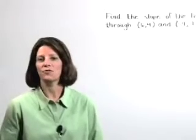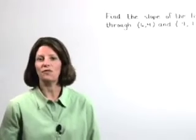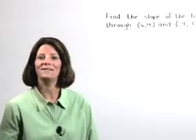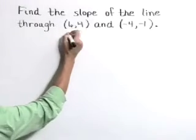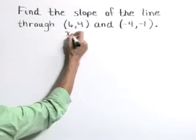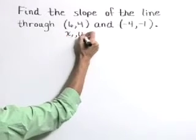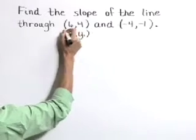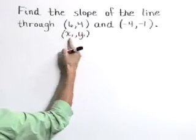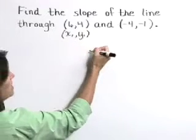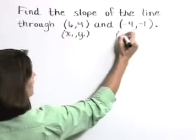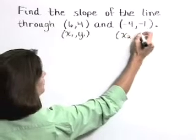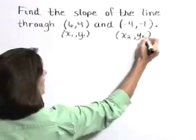Find the slope of the line through 6, 4 and negative 4, negative 1. Let's start by identifying our points as points 1 and 2. I'm going to label the point 6, 4 as x1, y1, and the point negative 4, negative 1 as x2, y2.